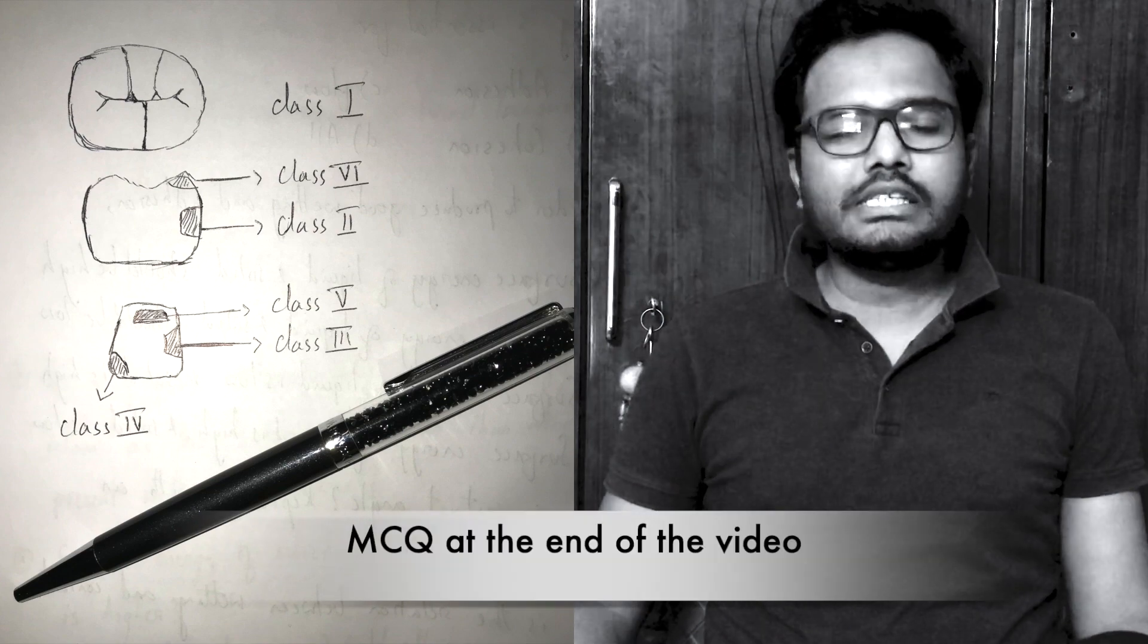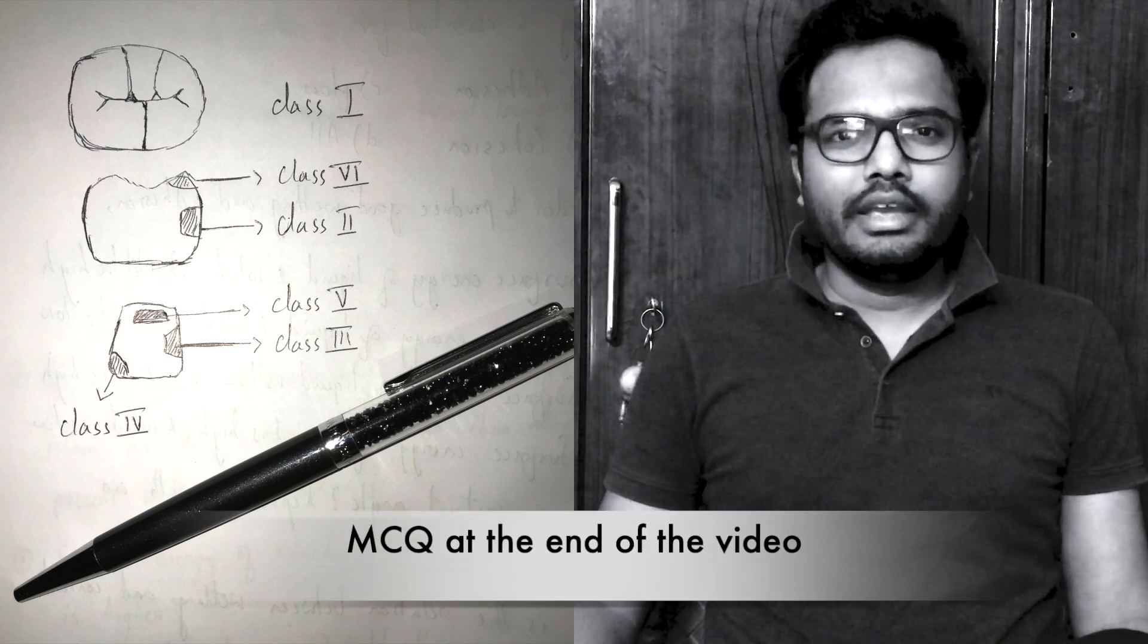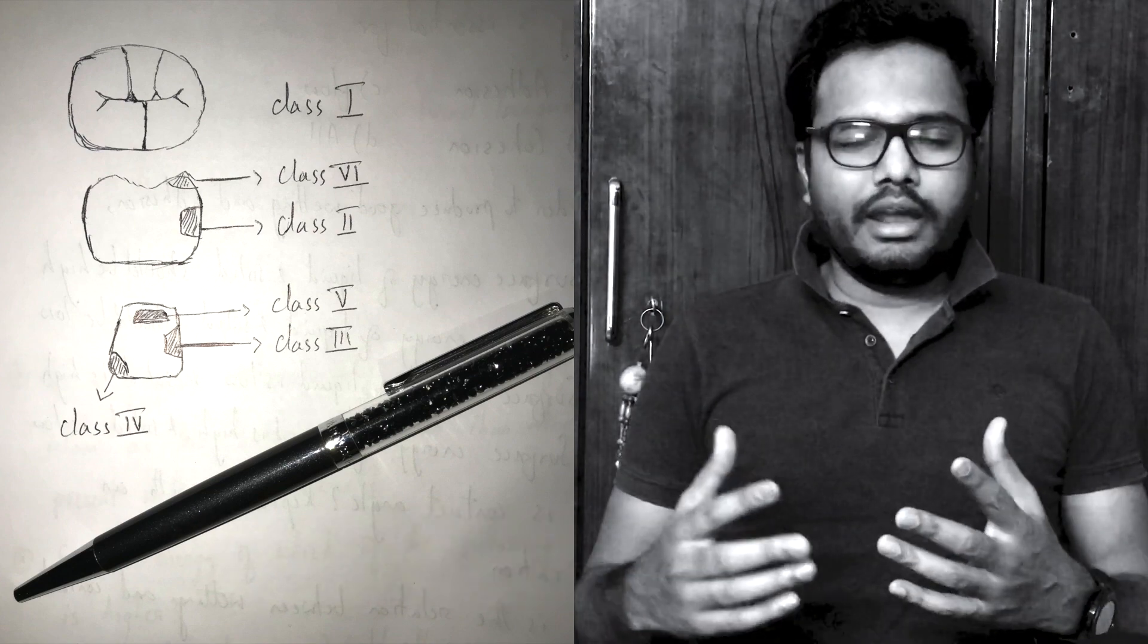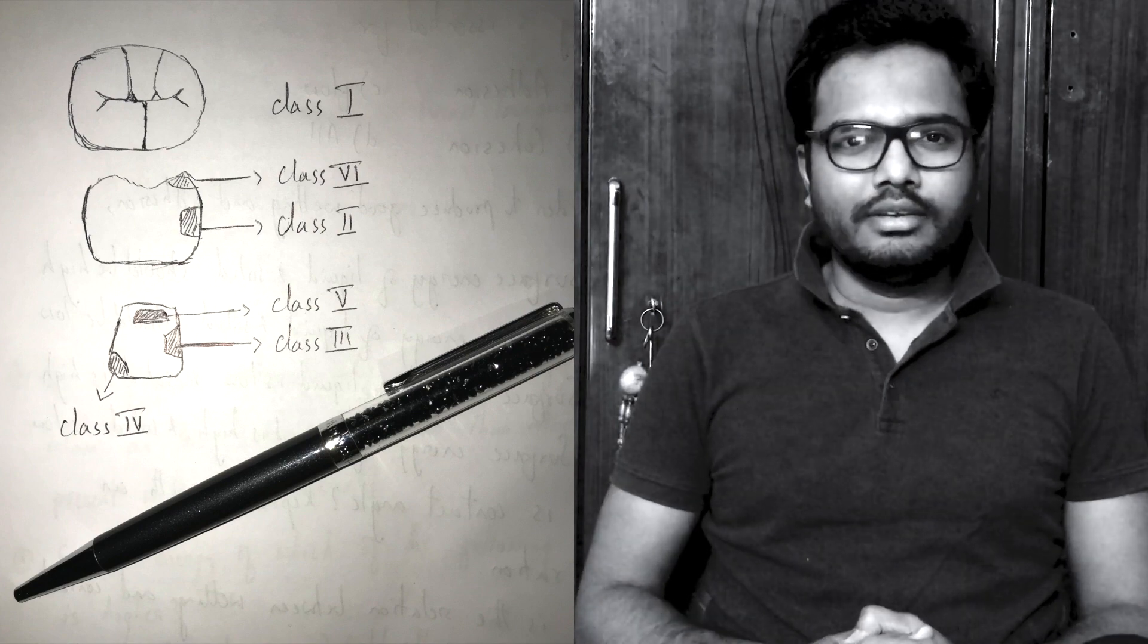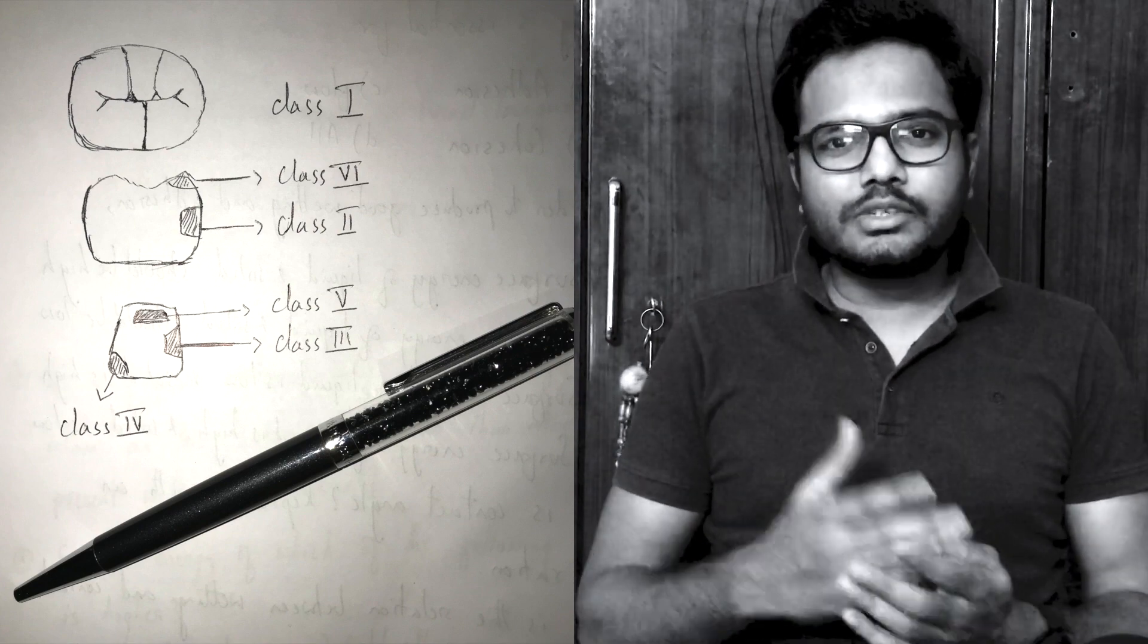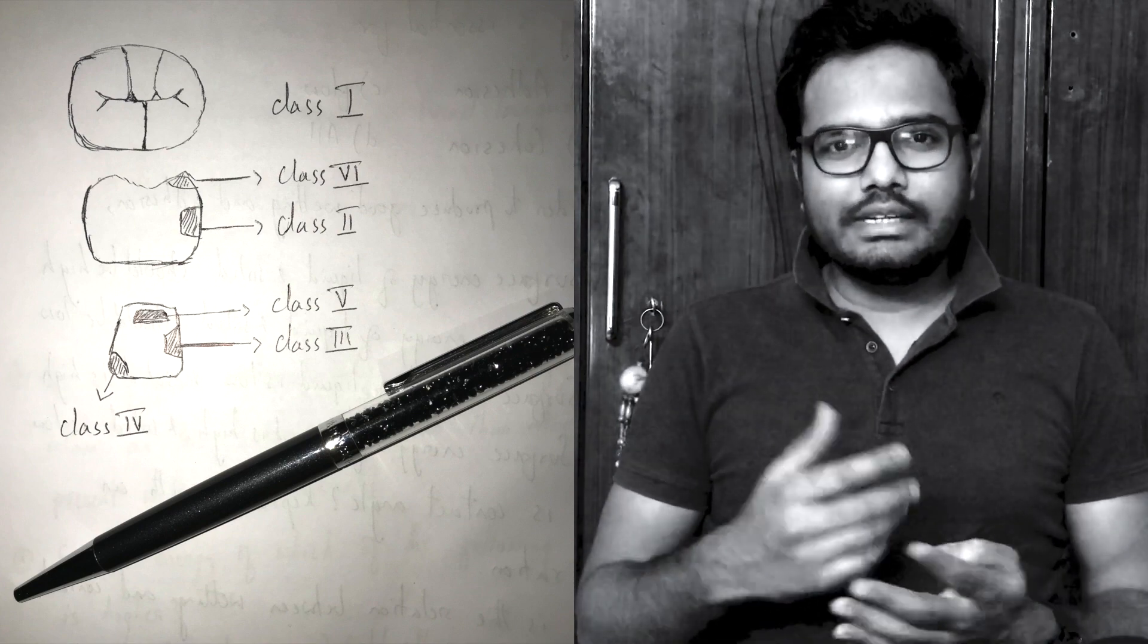Which of the following cavities in G.V. Black's classification involves any of the teeth? It can be either anterior or posterior and you have the following options: class 1, 2, 3, 4, 5 and 6.